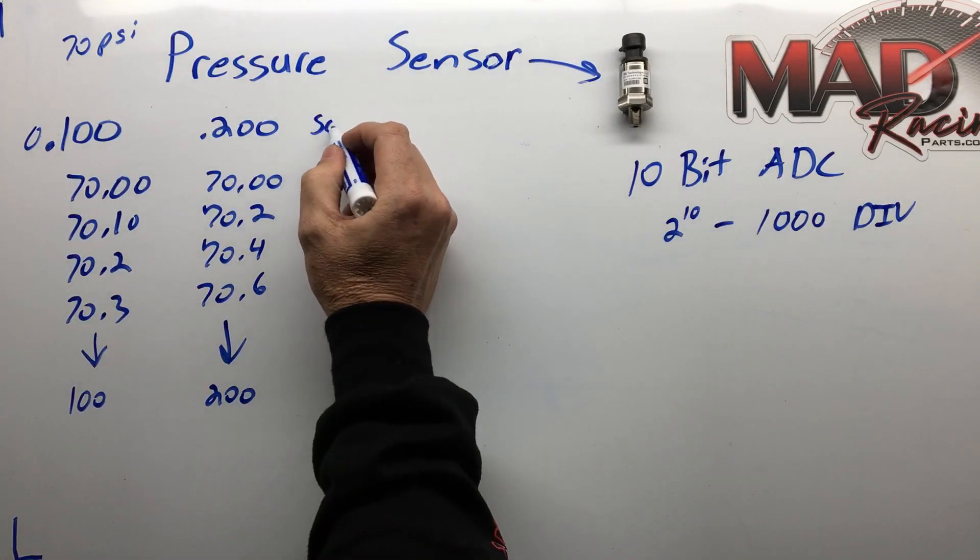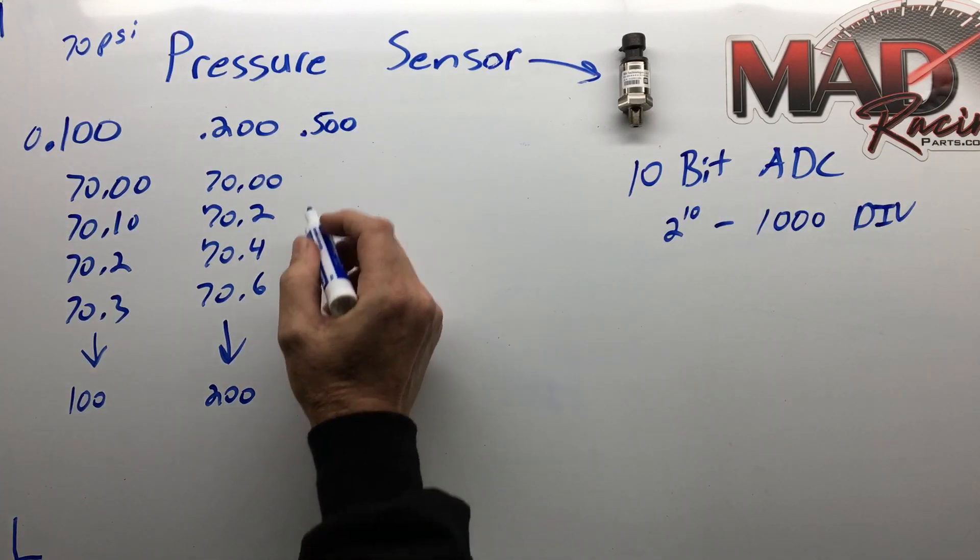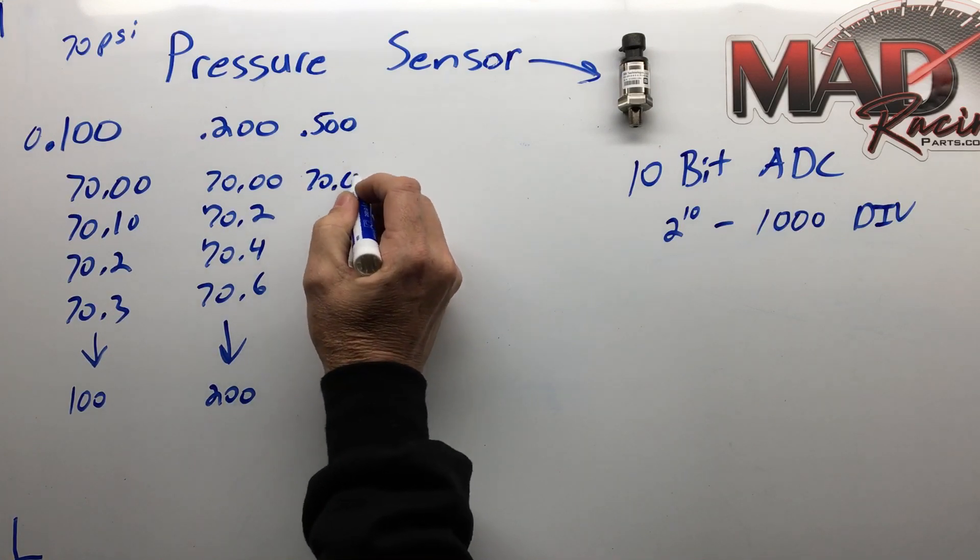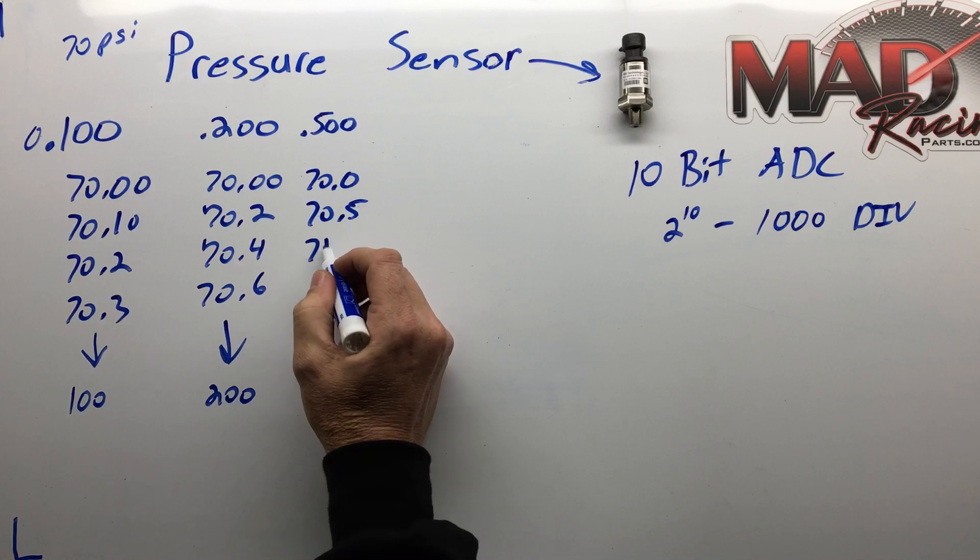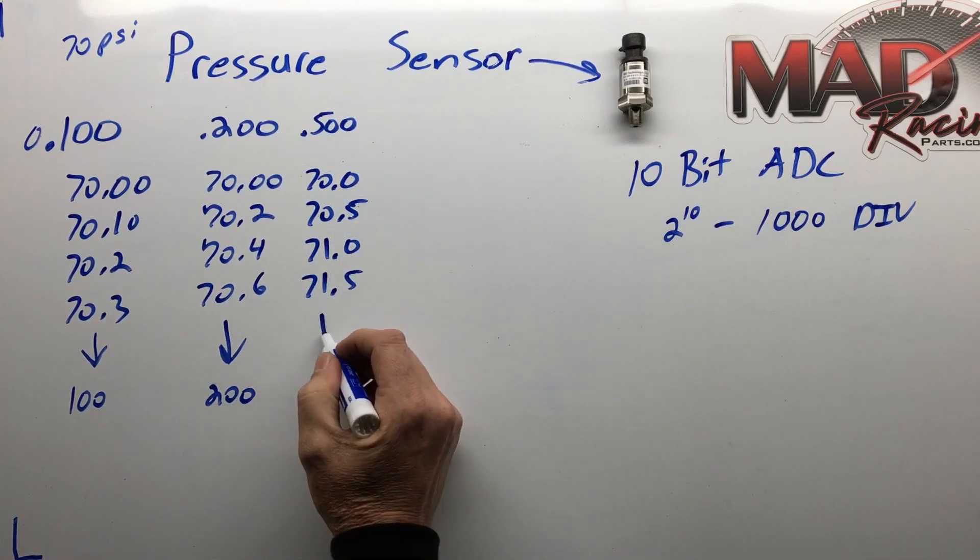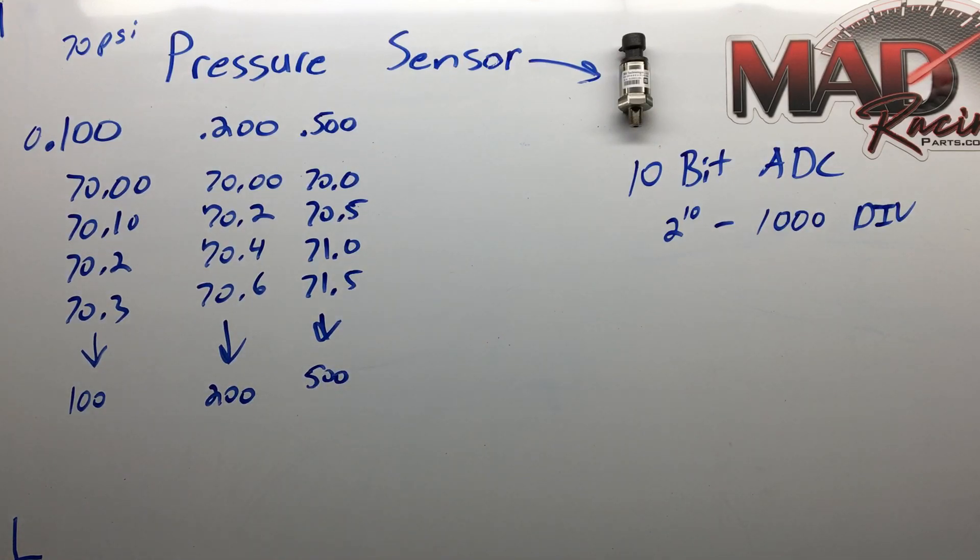What if we use a 500 pound sensor? Well, now we could be in 0.5 increments. So we'd be at 70.0, 70.5, 71, 71.5 and so forth all the way to 500. Because it has farther to go, it has to make a bigger jump between each. The value is bigger between each division.